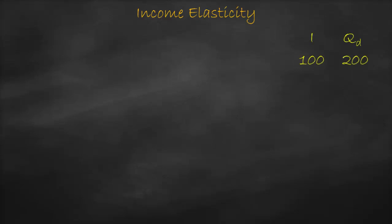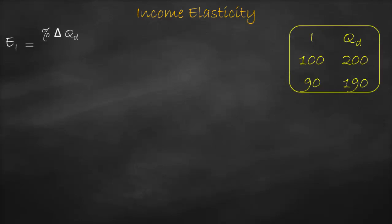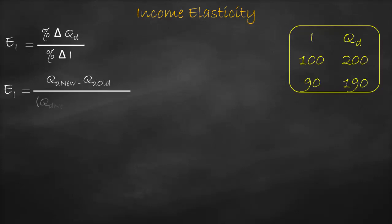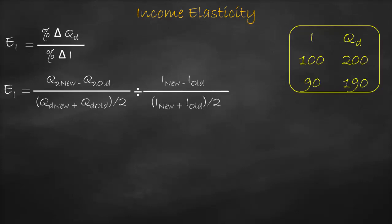Let's get another example about normal necessity. If income is 100 and quantity demanded is 200, and income decreases to 90, quantity demanded will decrease to 190. If income decreases, quantity demanded decreases — we have a positive relationship between income and quantity demanded, therefore this good is a normal good. We can prove it using the income elasticity midpoint formula. Substituting: 190 minus 200, divided by (190 plus 200) divided by 2.